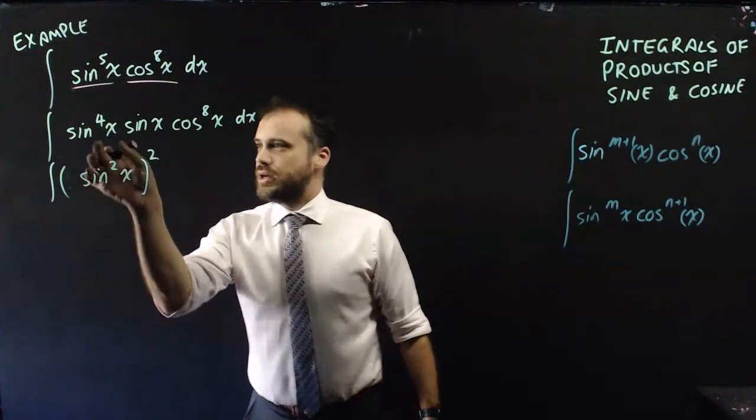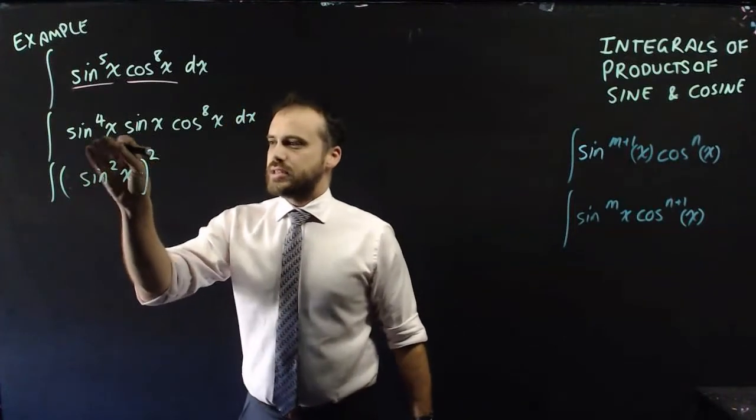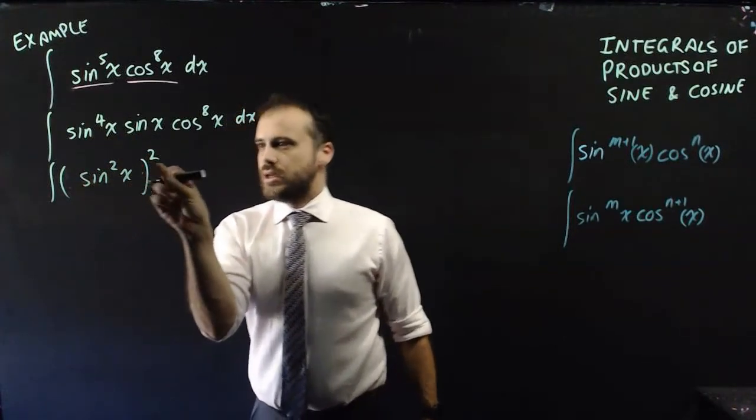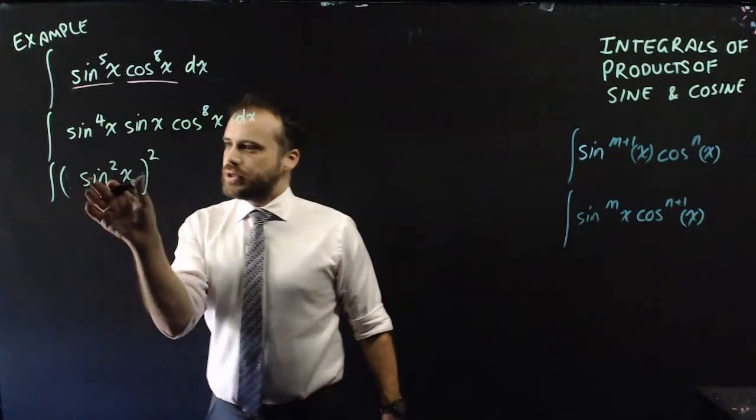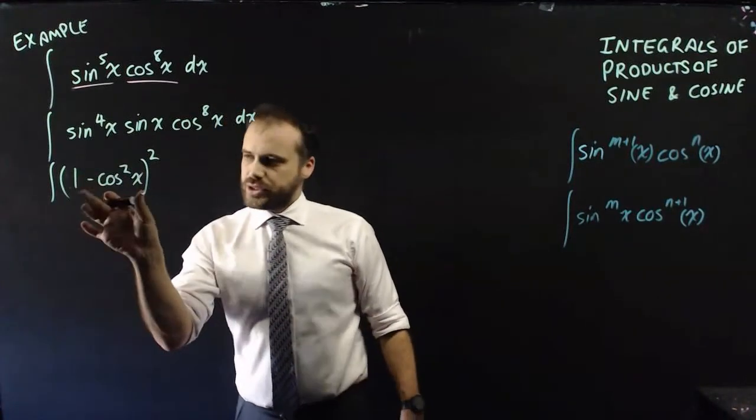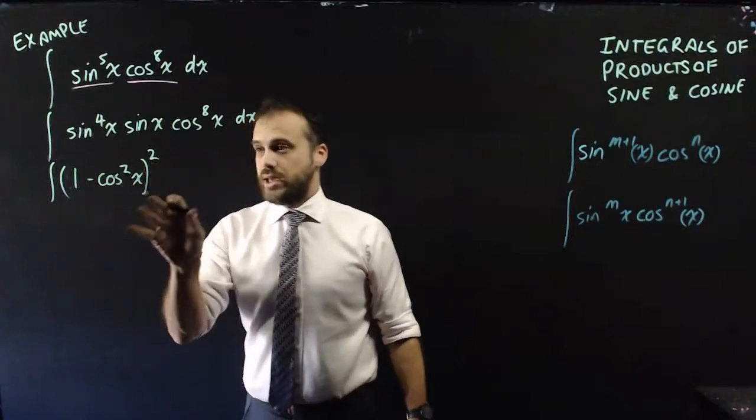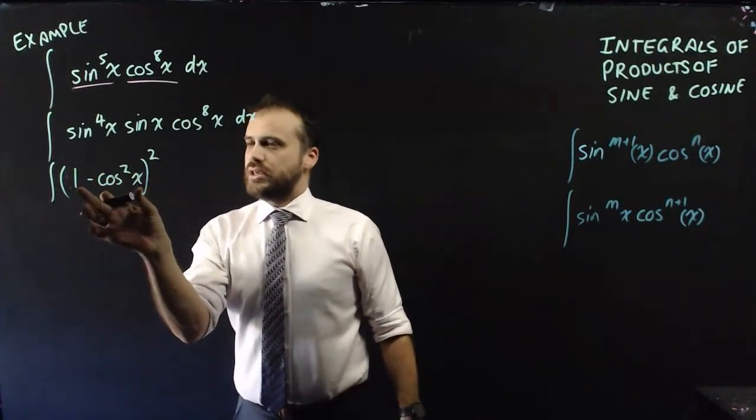So just focusing on this bit here, I've said sine to the 4x is the same as sine squared x and then squared. Okay, why have I done it this way? Because sine squared x can be expressed as 1 minus cos squared x. And we get this neat little thing here.